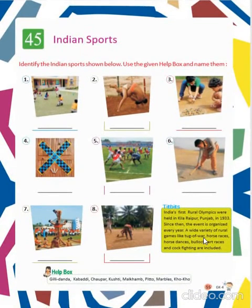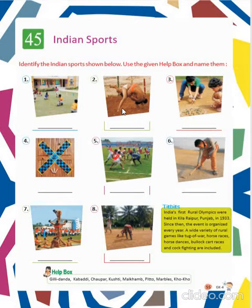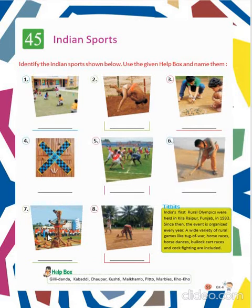Now come to Chapter 45. These are some Indian sports. By looking at the picture, you have to tell what each one is. It is Khonkhon. It is Kushti. It is Marbles. It is Chopper. It is Kabaddi. This one is Killidanda. This one is Malkam. And this one is Pito. So, these are some famous Indian sports.